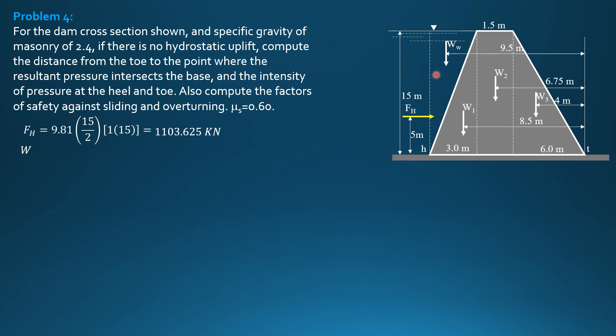Weight of water, 9.81 times one-half of 3 times 15 times 1 equals 220.725. Weight 1 is 2.4 times 9.81, 0.5 of 3 times 15 times 1. That's the volume. 529.74 kilonewtons. Weight 2, 2.4 times 9.81, specific weight of masonry, 1.5 times 15 times 1. That's 529.74 kilonewtons also.